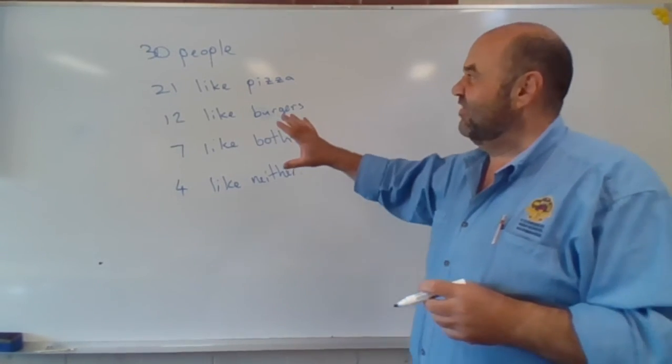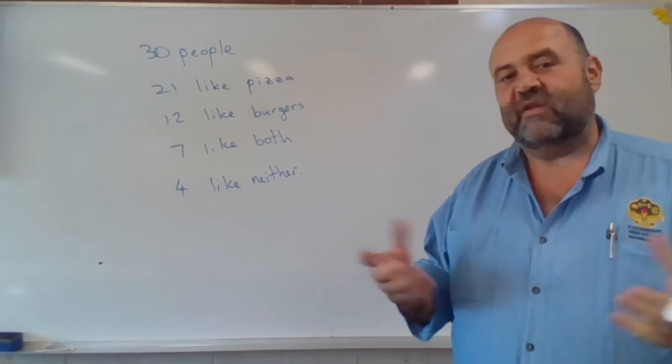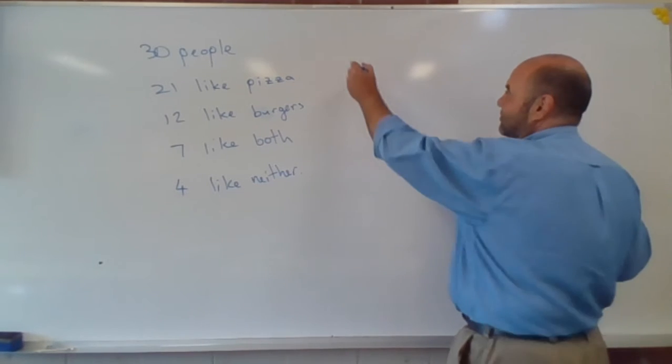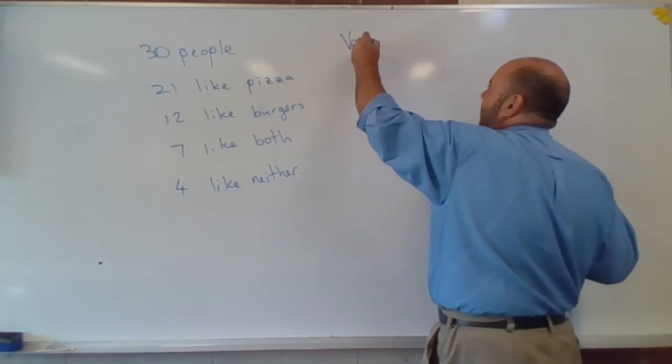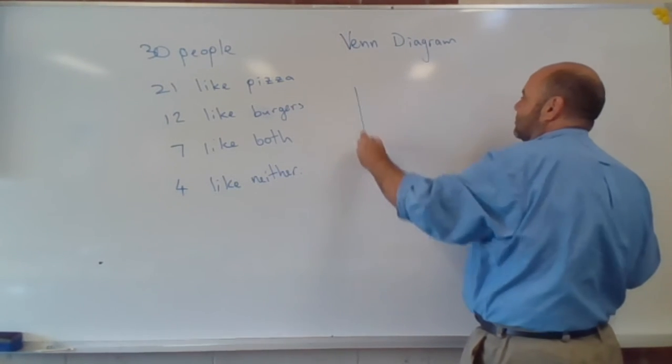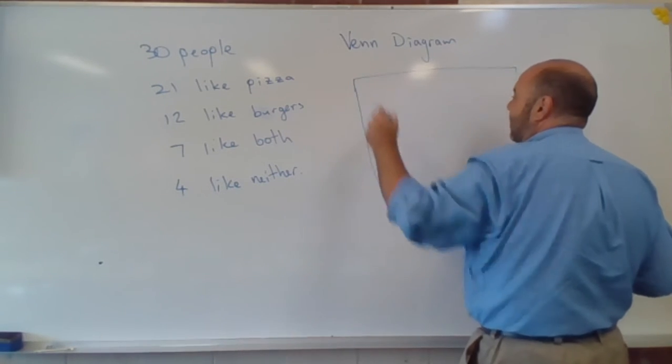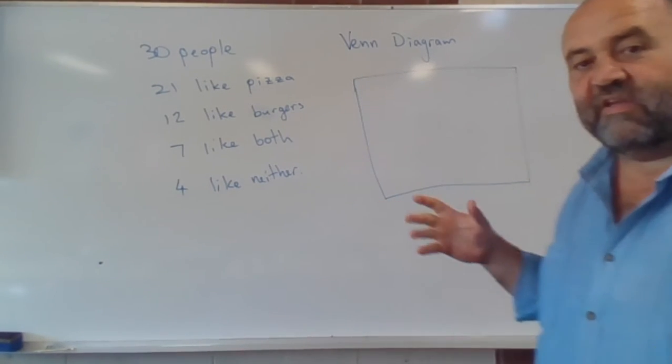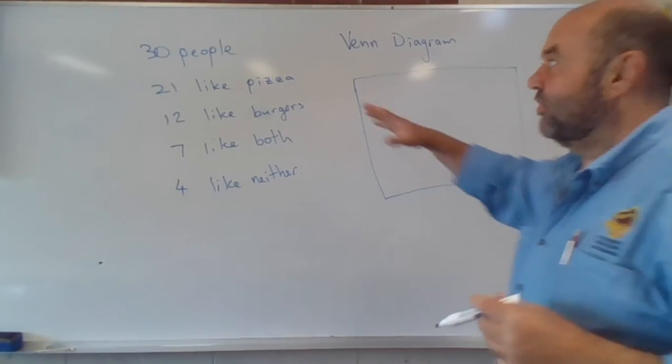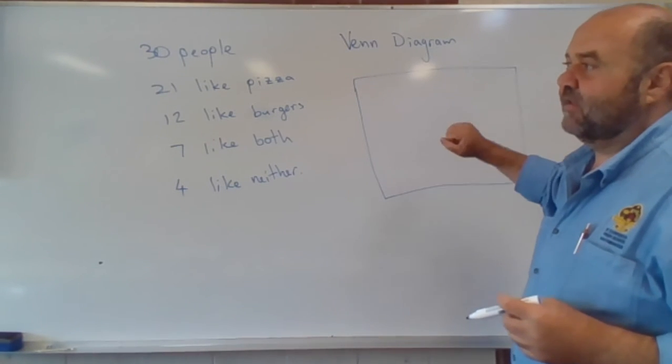So what we're going to do, our problem is to display this information in both a Venn diagram and a two-way table. So if we're going to talk about a Venn diagram, a Venn diagram happens within a rectangle.